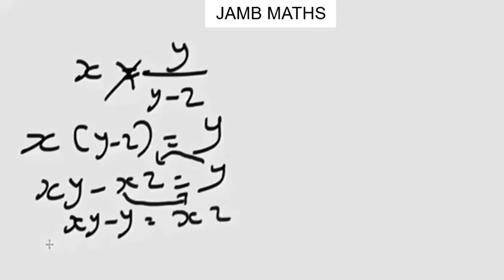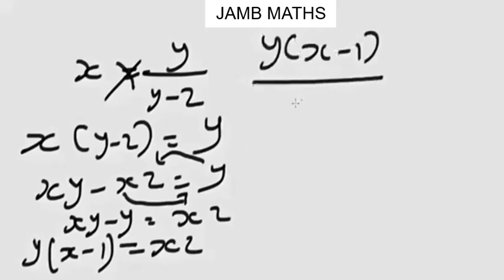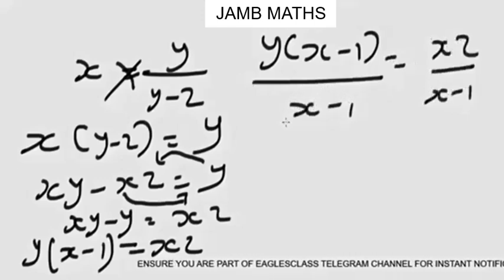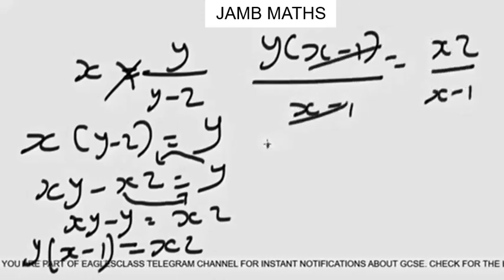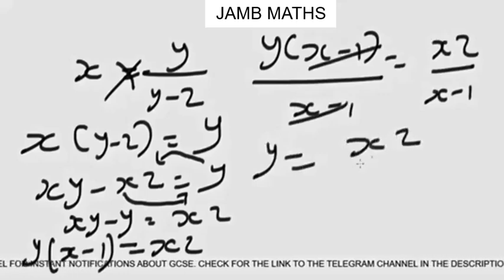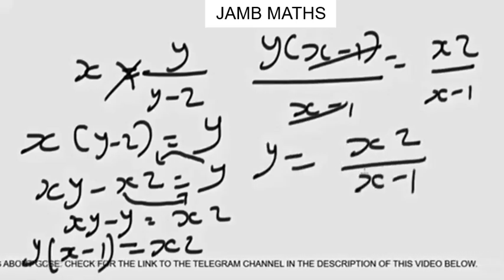So at this juncture let's factorize. When you factorize you're going to have y in bracket, x minus 1, equals xz. So finally to make y the subject of the formula, divide both sides by x minus 1. So we're going to have y times x minus 1 over x minus 1 equals xz over x minus 1. Okay, so let's cancel this and finally our result will be y equals xz over x minus 1.